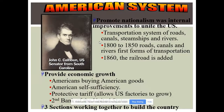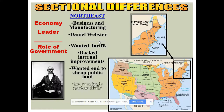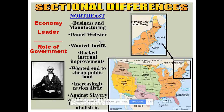Henry Clay hoped that with the American System, the three sections of the country would work together to build the nation. In the Northeast, Daniel Webster was a major leader. They were the business and manufacturing center, wanting tariffs to protect their goods, internal improvements for cheaper access to factories, but opposed cheap public land — because Northeastern states were losing people to the West and losing political power in the House. They were nationalistic and typically had the greatest numbers of abolitionists.